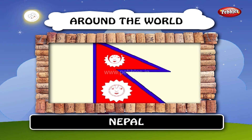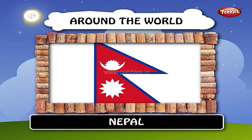Until 1962, the flag's emblems — the sun and the crescent moon — had human faces. They were removed to modernize the flag. The faces remain on the sun and moon on the royal standard. The crescent represents the royal house, and the sun denotes the Rana family.